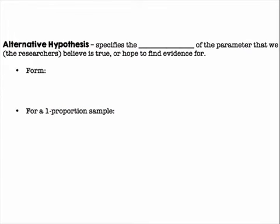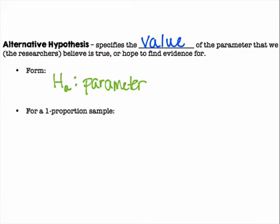Then you're going to have an alternative hypothesis. This specifies the value of the parameter that we, the researchers, believe is true or hope to find evidence for. The form is H sub A, your parameter — in this case P for proportions, or later mu for means — is either less than, greater than, or not equal to our claim.